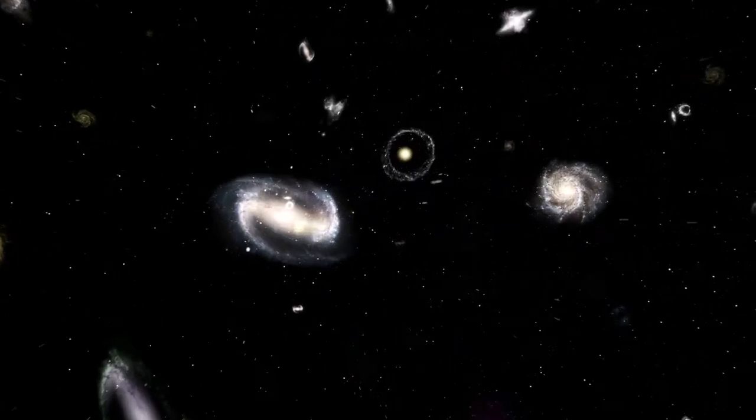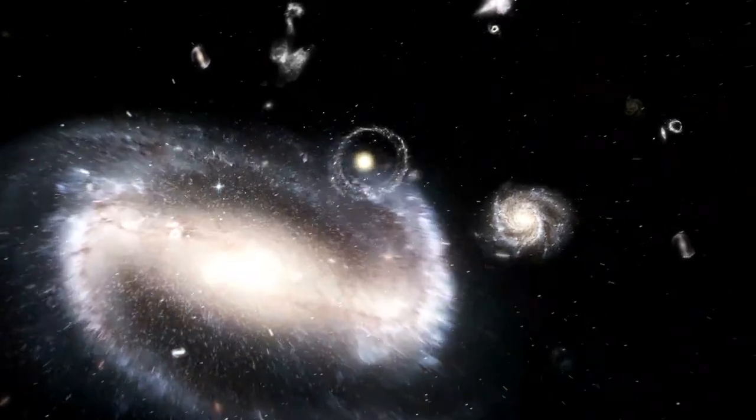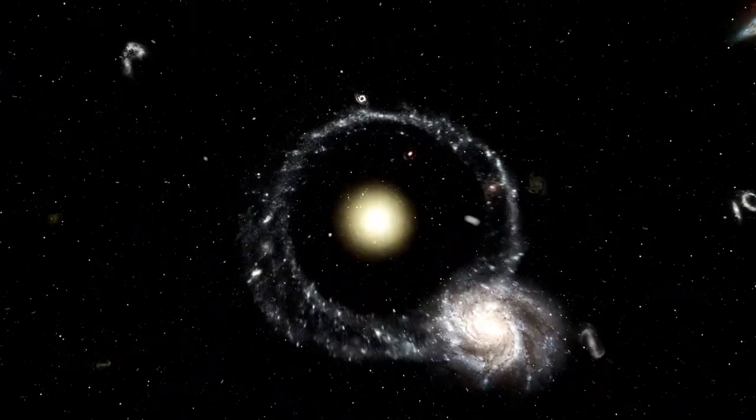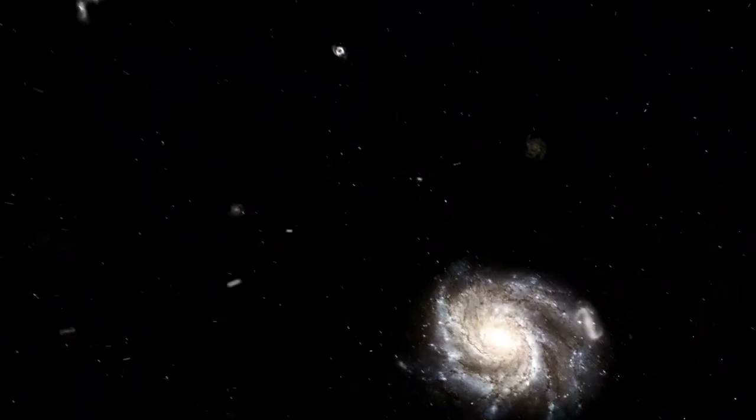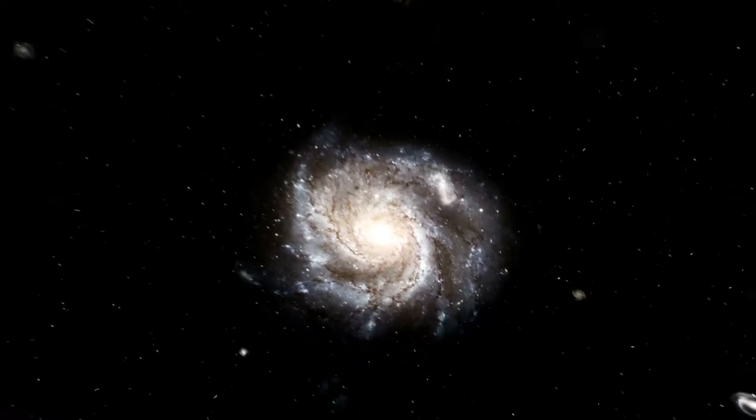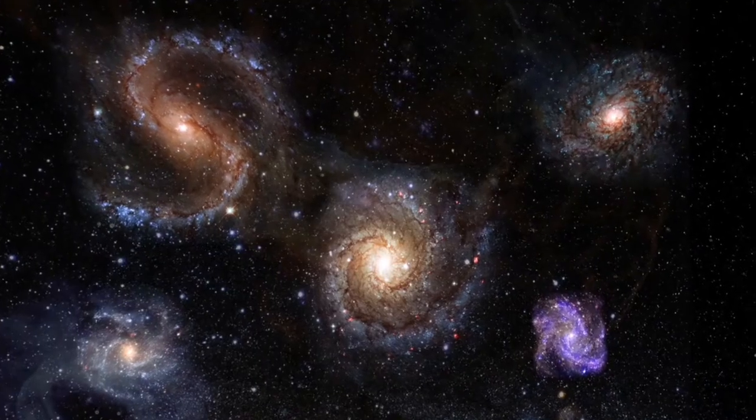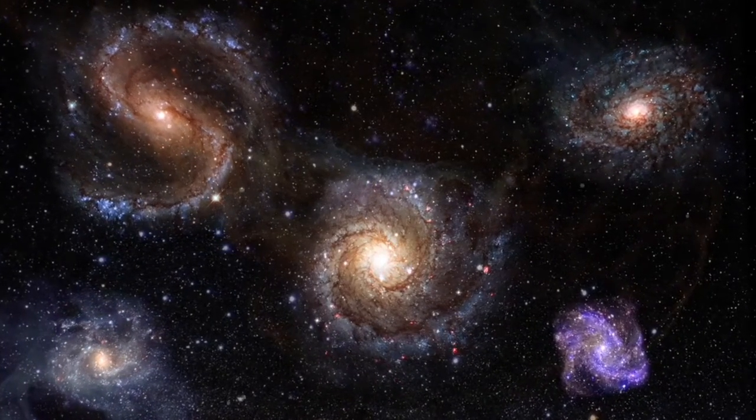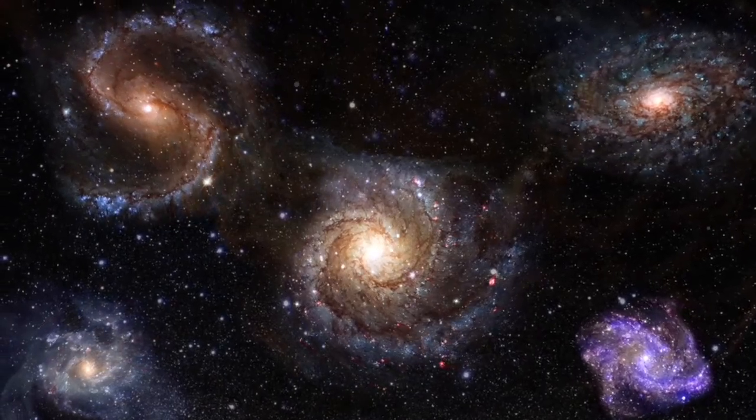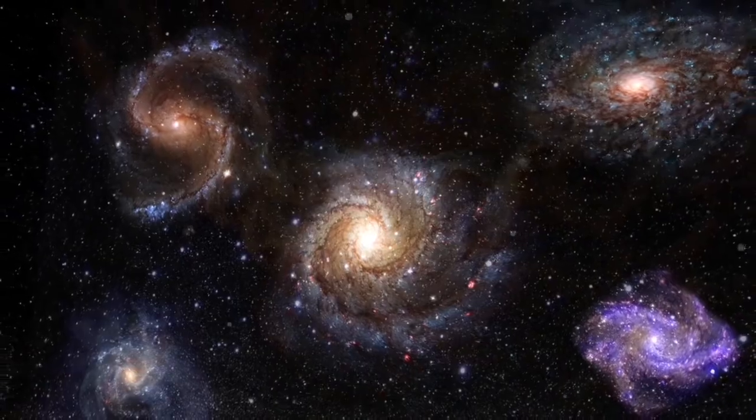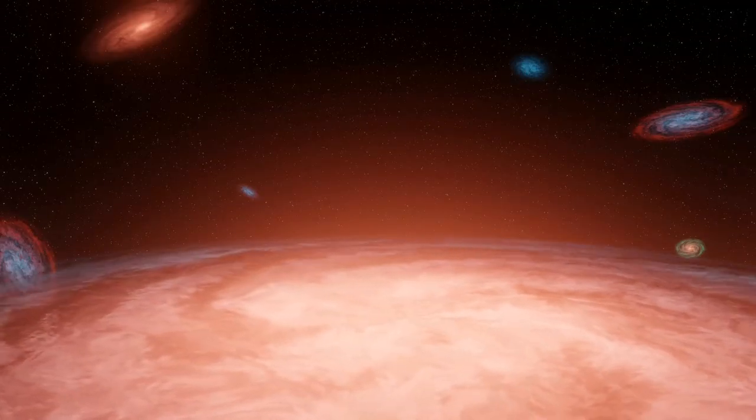In the universe, galaxies are sprawling systems of dust, gas, dark matter, and contain from a million to a trillion stars that are held together by gravity. Nearly all large galaxies are thought to also have supermassive black holes at their centers. Scientists have classified galaxies into five main types: spiral, lenticular, elliptical, peculiar, and irregular. Today we will discuss these galaxies.